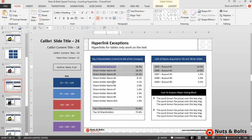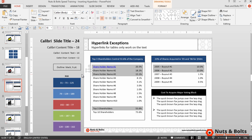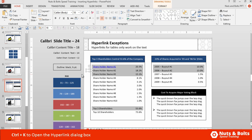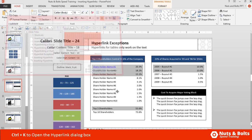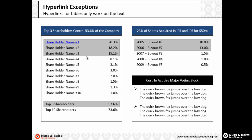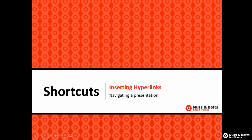A workaround when working with tables, if you want to add hyperlinks — for example, to a specific cell like shareholder name number two — is to add an invisible rectangle: a rectangle or other shape with no fill and no outline. Then use Ctrl+K to add the hyperlink to that invisible shape. In Slideshow Mode with Shift+F5, there's no visible hyperlink, but if I hover over to the left, I get the hyperlink, and if I click it, I jump to that slide.